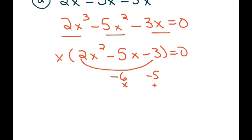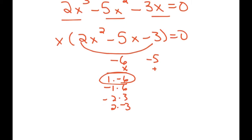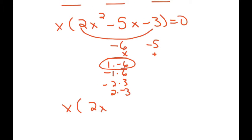You can write out all your pairs of numbers that multiply to give you negative six. Or you can just determine it in your head — a lot of you can just do this part in your head. You figure out real fast it's 1 and negative 6. So now I write it as 2x squared plus x minus 6x minus 3, because what we do is we rewrite the middle term as the sum of the two factors we just found.